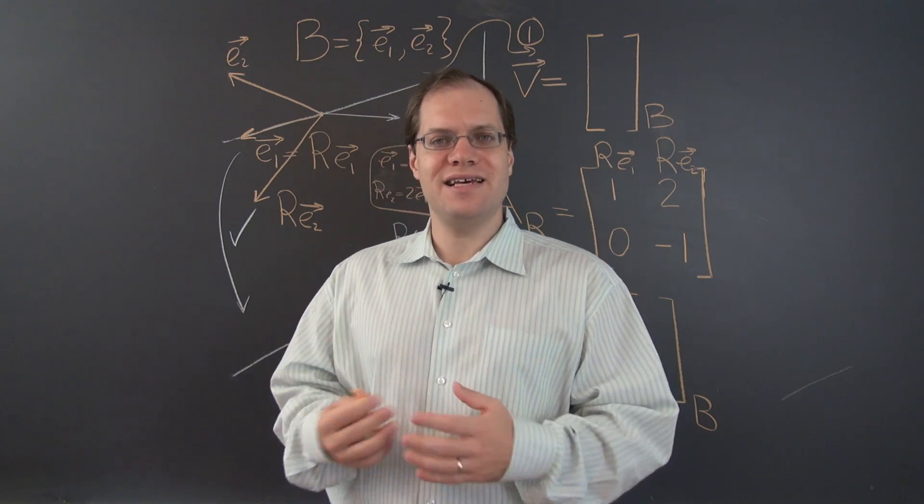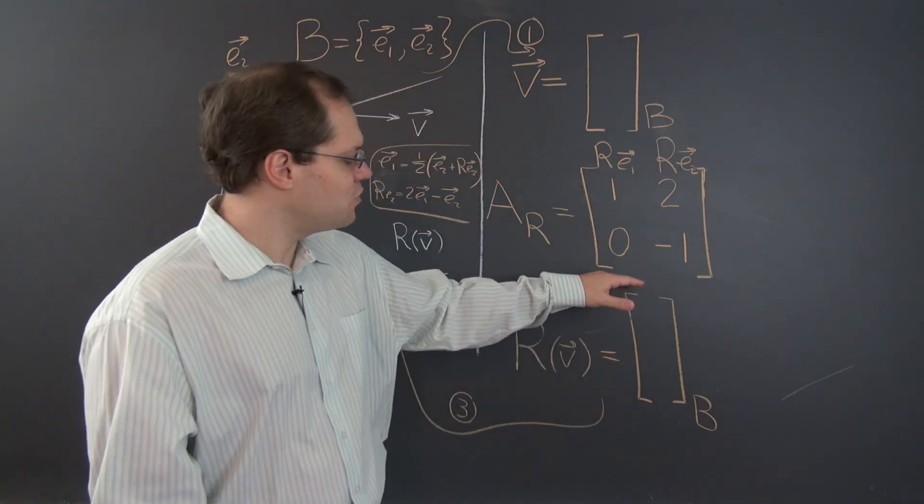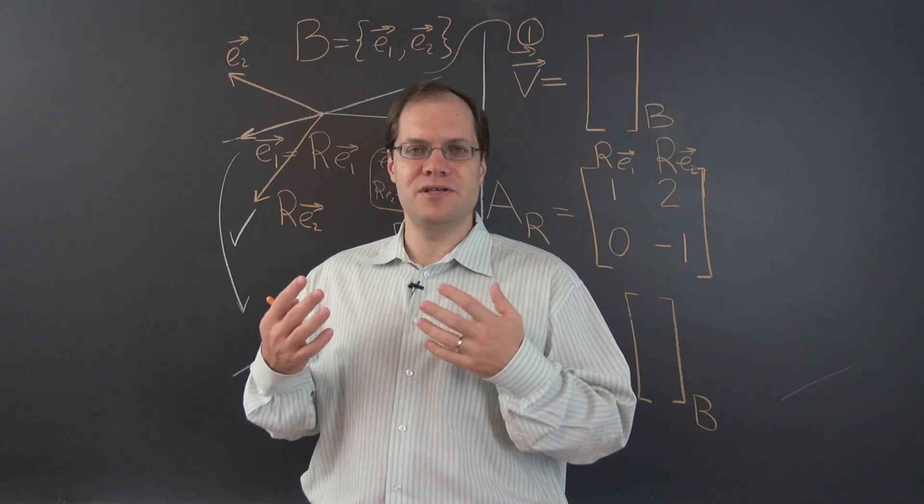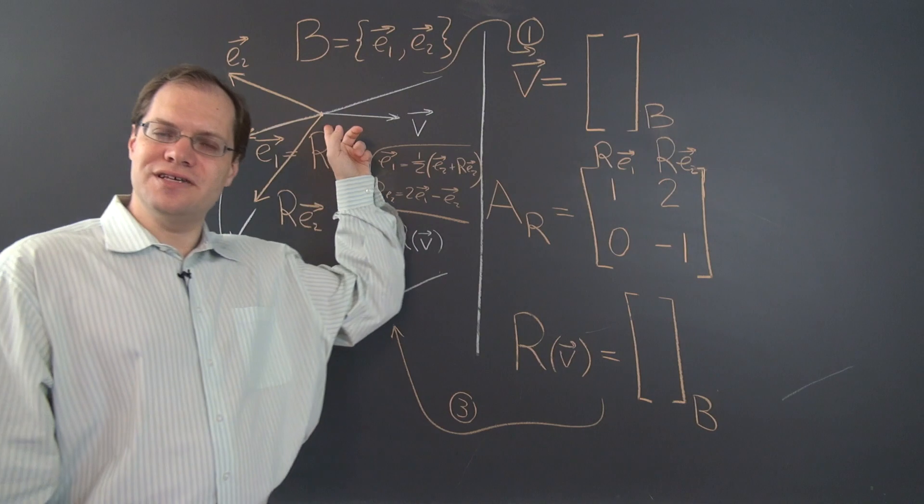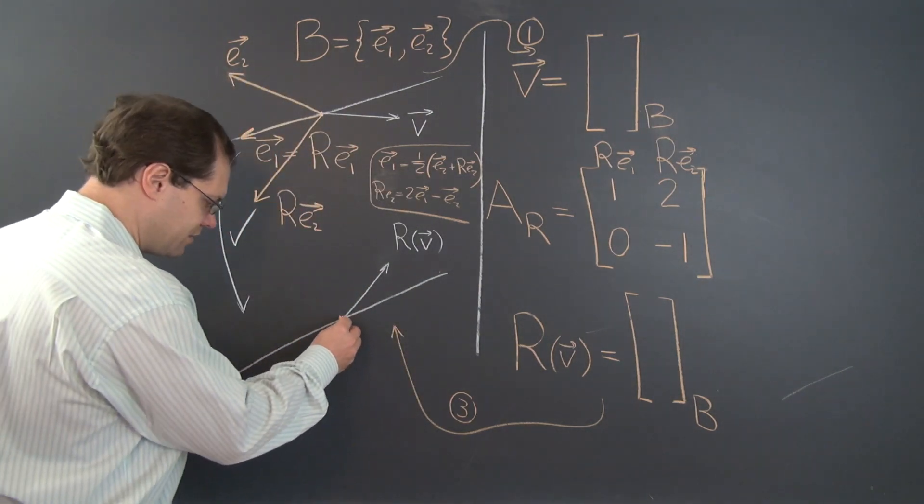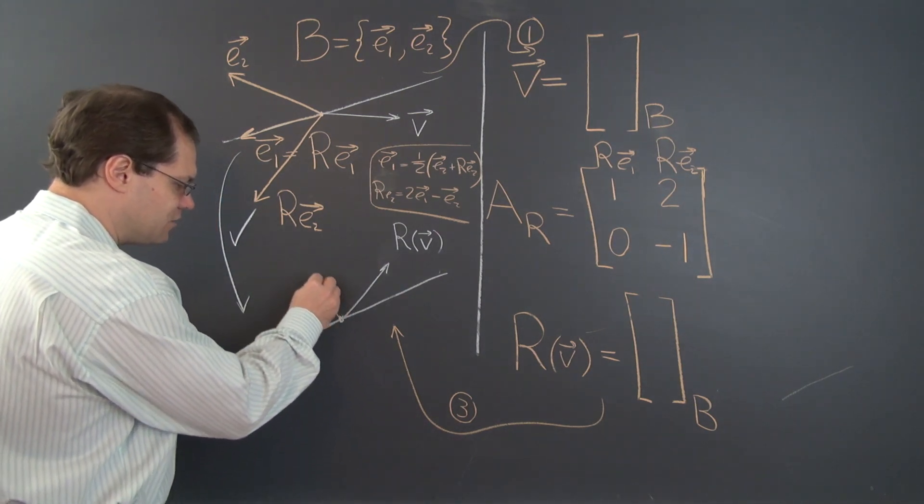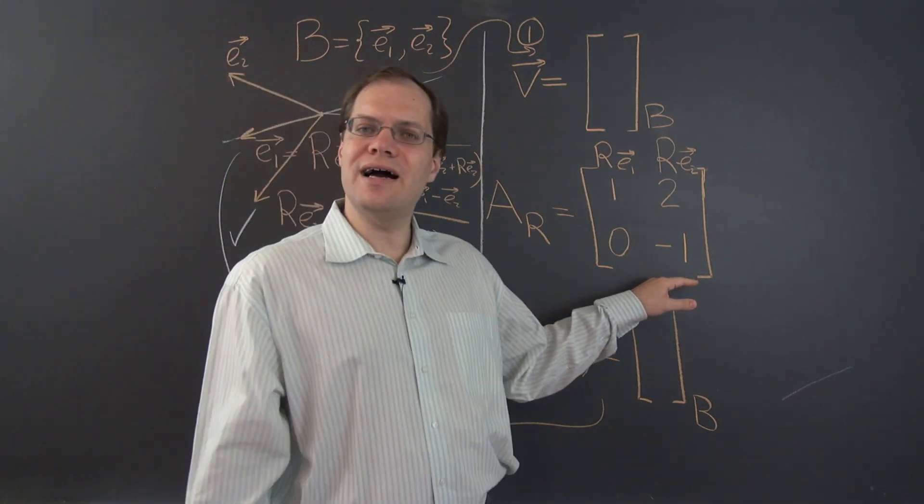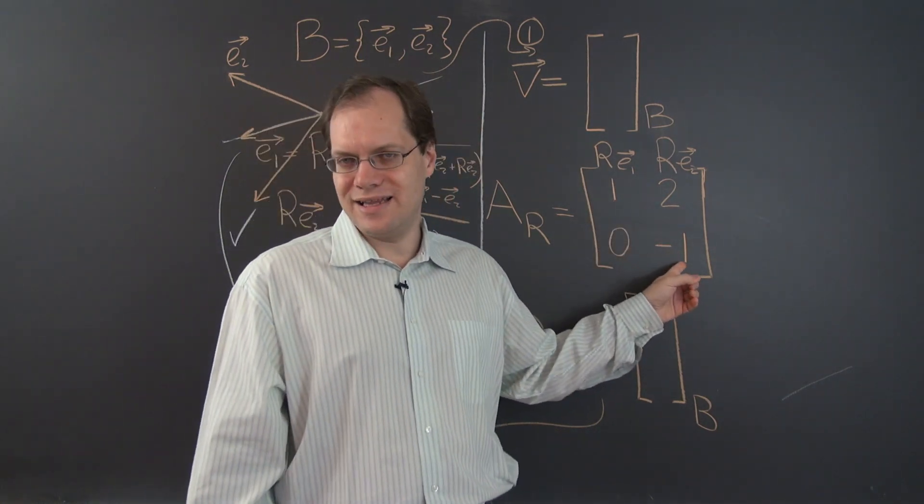So before we move on to the next video, in which I'll show you how this matrix is used, I'd like to point out one wonderful property of this matrix that will make it immediately clear to you why component spaces are so powerful. Of course you recall that the eigenvalues of this transformation are 1 and minus 1. The eigenvalue of 1 corresponds to this eigenvector. And the eigenvalue of negative 1 corresponds to this eigenvector. And what are the eigenvalues of this matrix? Well, of course, they're also 1 and negative 1.